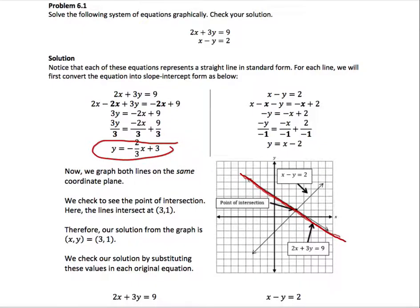We do the same for the second line. We rewrite this equation in slope-intercept form by isolating y. To do that, we subtract x from both sides and divide both sides by negative 1, ending up with y equals x minus 2.